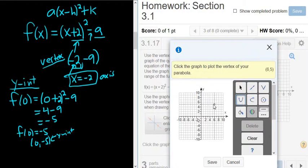And then it says click the graph to plot the vertex. Notice up here the point shows up. So we want the point negative 2, negative 9. It's going to be way down here. Looks like I'm okay. I'm going to left click.